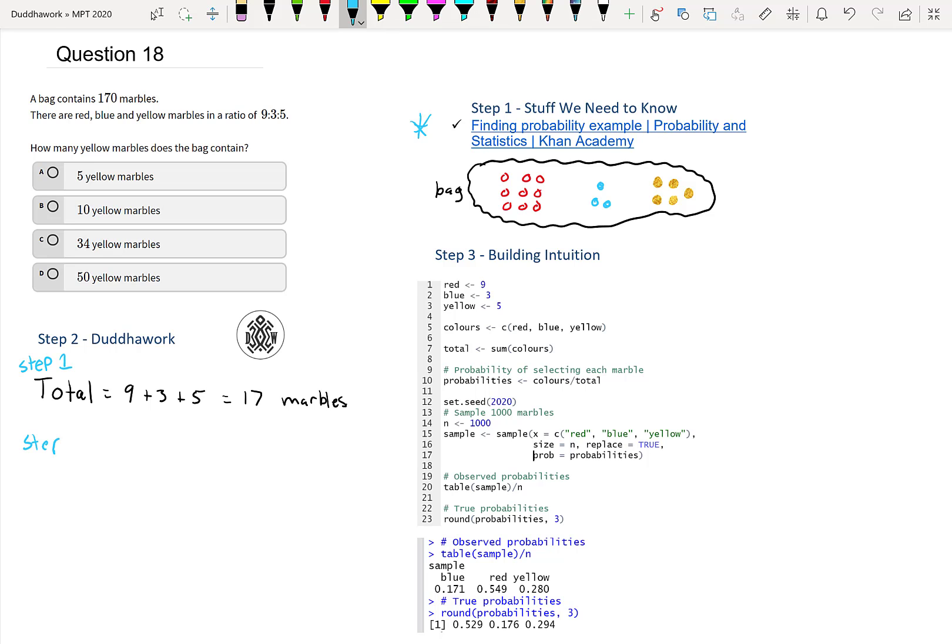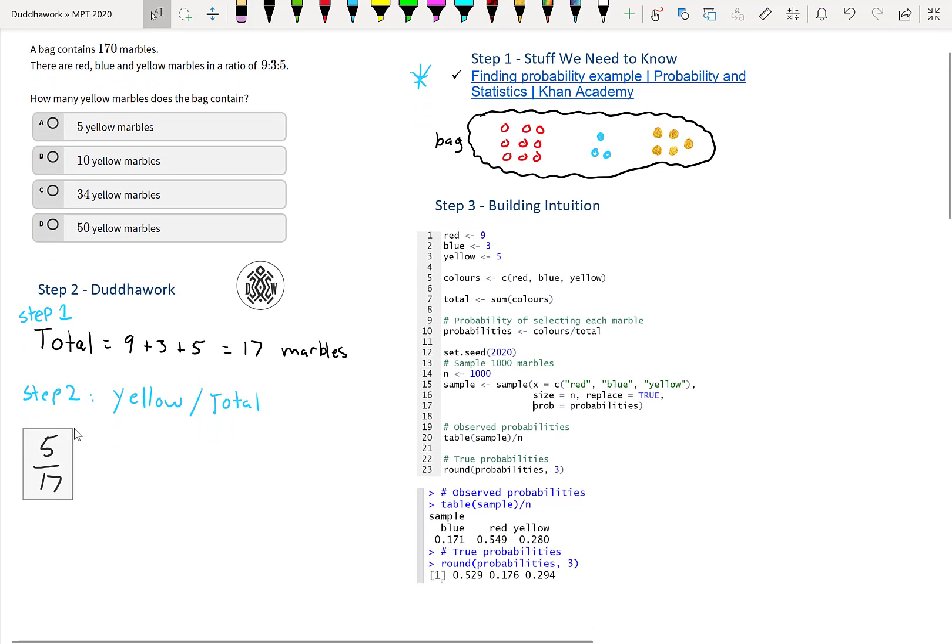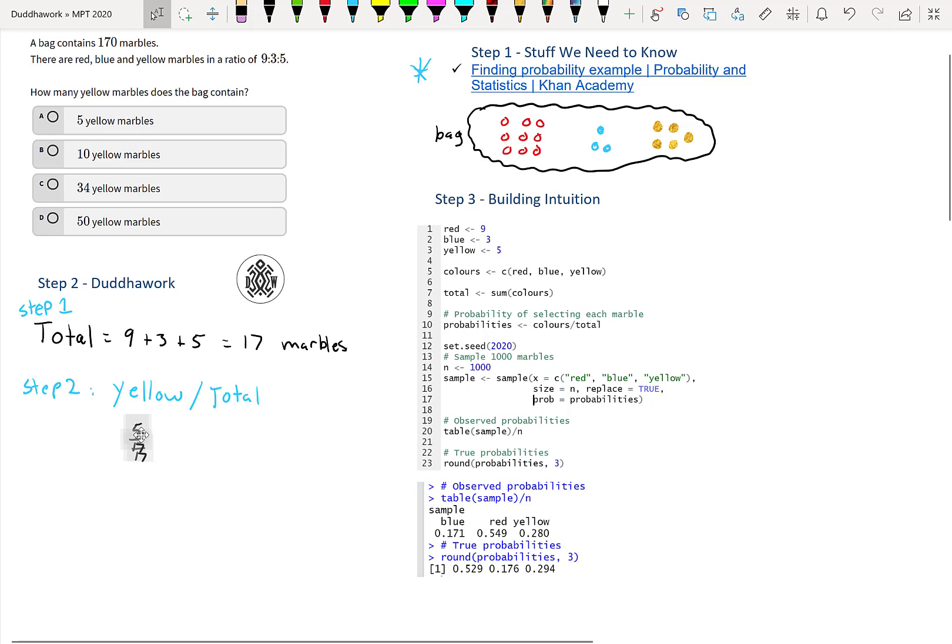Step two would be yellow divided by total to find the proportion. So how many yellows do you have? You have 5 over 17. This is in the 17 marble bag, but we have 170 marbles. So there's two ways we can go about this. One is to go the percentage route, and the other one is to go equivalent fraction.